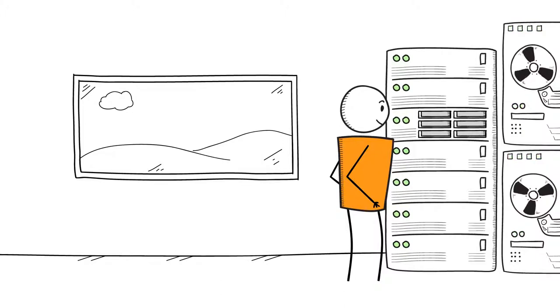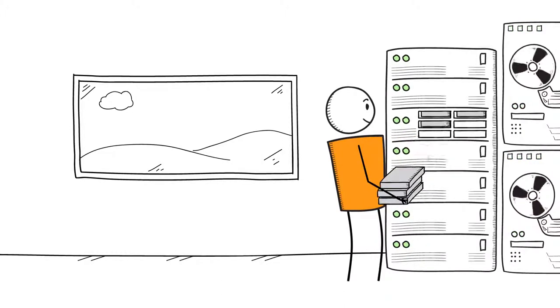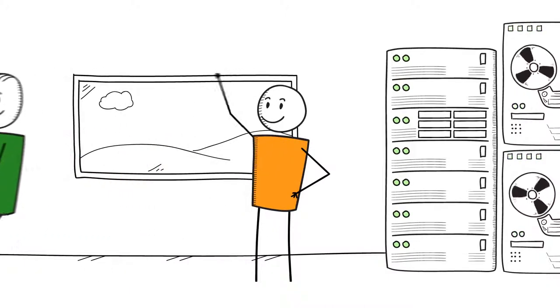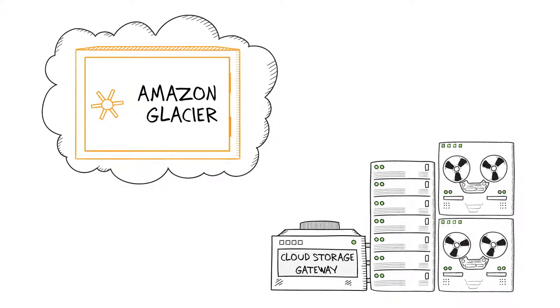And if you already have a repository of cold data, you can use the AWS import-export service to transport it into Amazon Glacier with portable storage devices. You can also use third-party gateways and tools to move your data to Glacier.